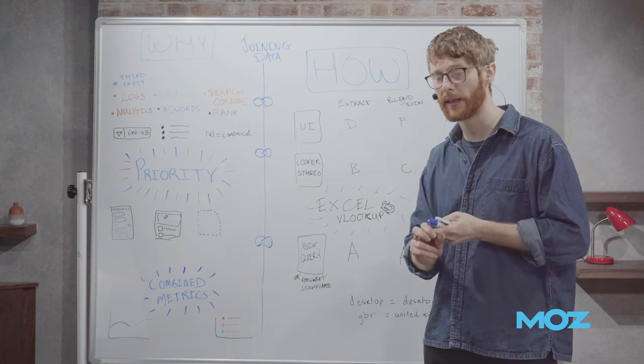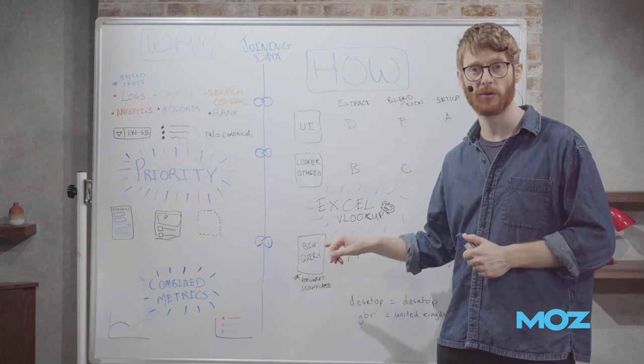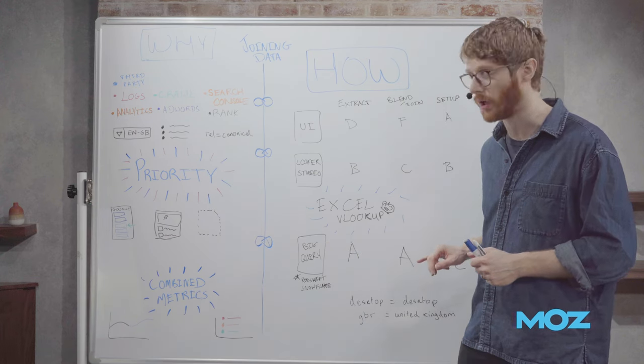The reason they give it a D slash C is many of the Google sources, your Search Console, your Analytics and your AdWords will have native exporters to BigQuery that are very easy to set up which really reduces a lot of this setup time.